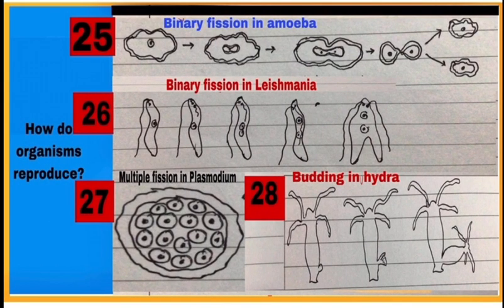25 is showing binary fission in amoeba. 26 is showing binary fission in leishmania. 27 is multiple fission in plasmodium, and 28 is budding in hydra.